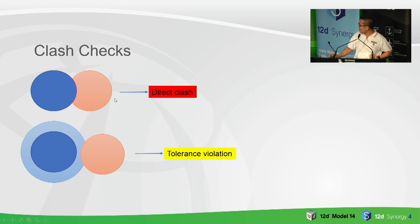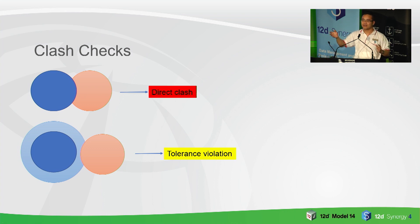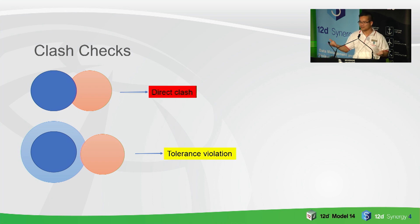There are two kinds of checks. First is a direct clash — it means two pipes cutting each other, which is really bad. The main focus here is the tolerance violation: each of the objects you want to check for has a buffer around them. You can define your buffer using your rules, and then if any of the other objects violate this tolerance — the light blue circle around it — it means you have a clash.